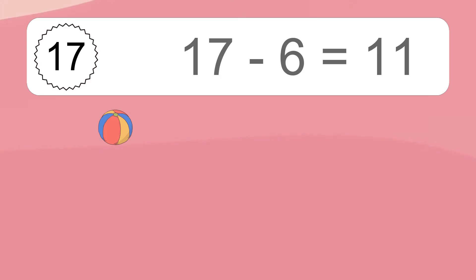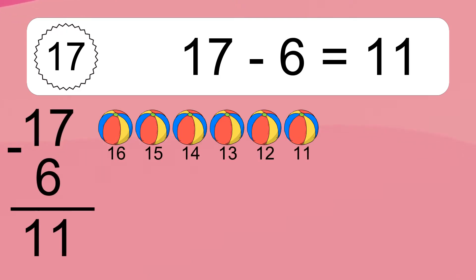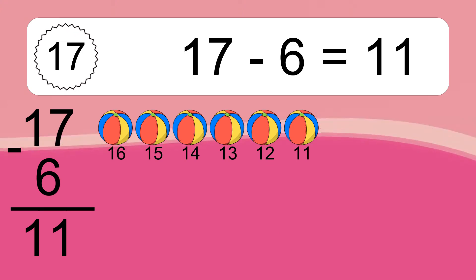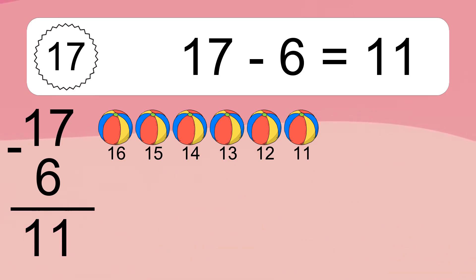17 minus 6 equals what? 17 minus 6 equals 11. Let's count it: 16, 15, 14, 13, 12, 11.